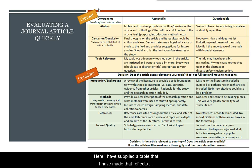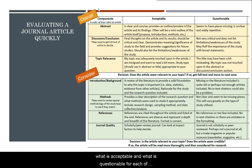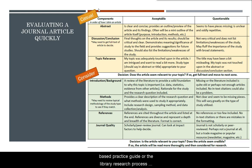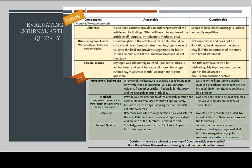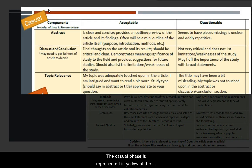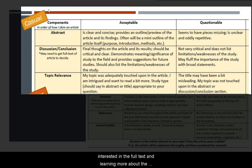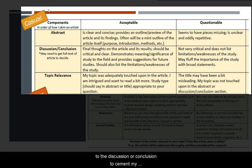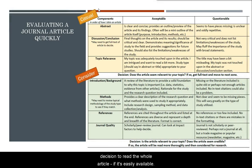Here is a table that reflects how to peruse a journal article quickly and what components of the article to look for. You will also see examples of what is acceptable and what is questionable for each component listed. To see this table as a PDF, please visit the evidence-based practice guide or the library research process guide. The casual phase, represented in yellow at the top of the table, is where you look over the abstract for clarity and relevance to your topic. At this point, jumping to the discussion or conclusion can help finalize the decision to read the whole article.